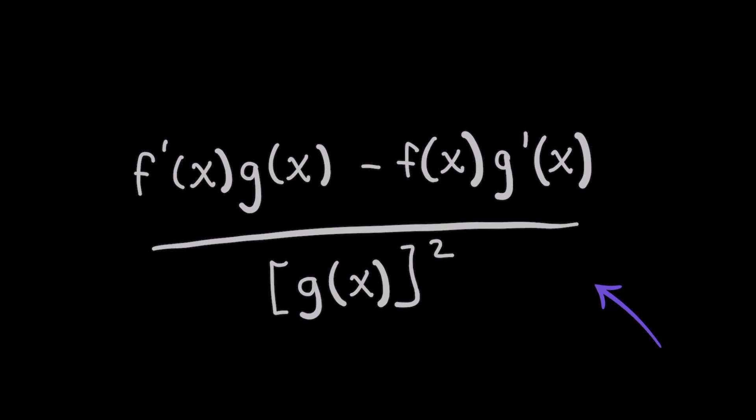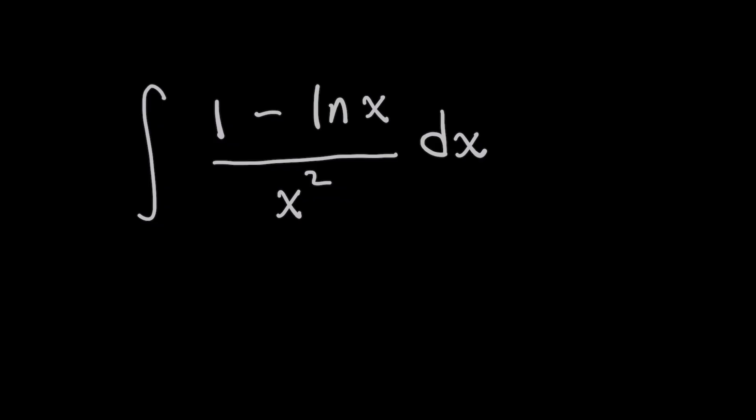Now, the reason why I'm bringing this to your attention is because instead of using integration by parts, this already looks a lot like the structure of the original problem because here g of x squared on the denominator looks like x squared. And then we have a difference of two terms on the top.